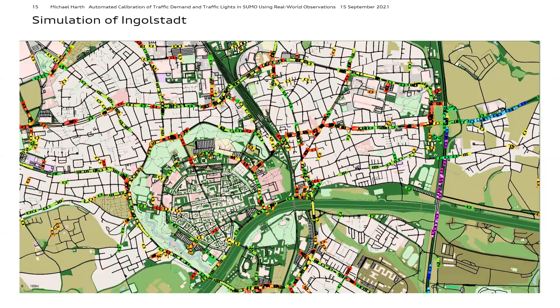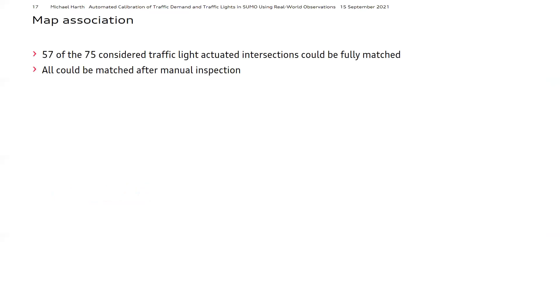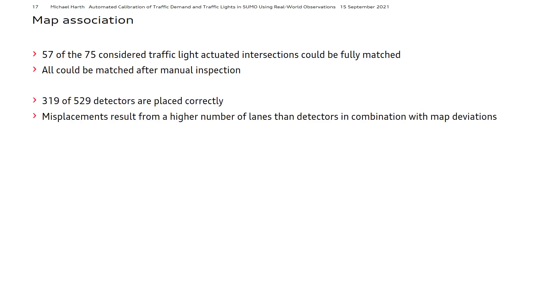Regarding the results, they are split into map matching, traffic light emulation, and traffic assignment. The map association results show that 57 of the 75 traffic light actuated intersections can be fully matched regarding inbound roads, lanes, and feasible maneuvers. Some map errors from the OpenStreetMap import must be manually corrected to successfully match all junctions. Detector placement is more erroneous because in many cases the number of detectors differs from the number of inbound lanes, causing detectors to potentially be matched onto wrong lanes and requiring manual shifting.